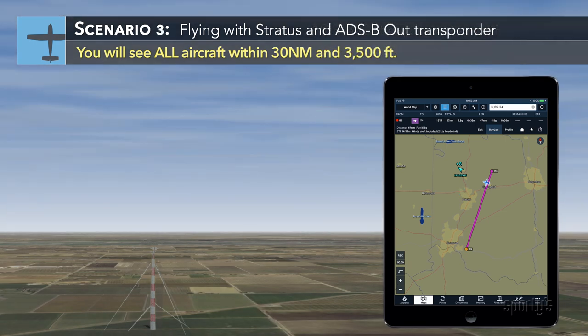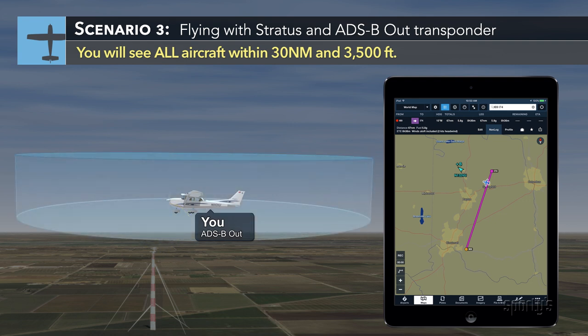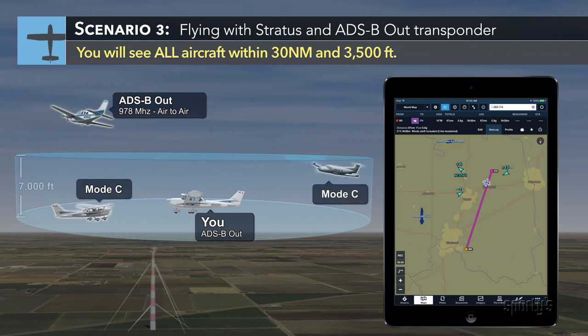The best possible case is when you have an ADS-B out transponder in your airplane. Here, you are transmitting out to the ground stations and creating your own hockey puck of traffic information. You'll see all traffic within a 30-mile diameter and 3,500 feet, including mode C targets that do not have ADS-B out installed.